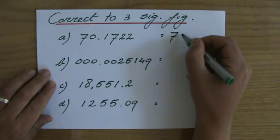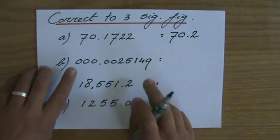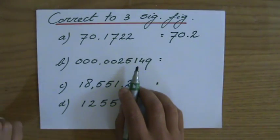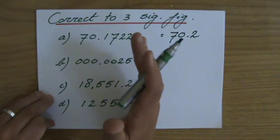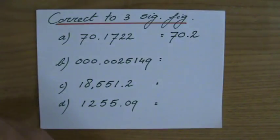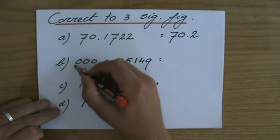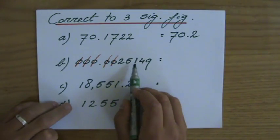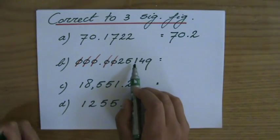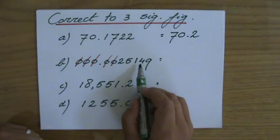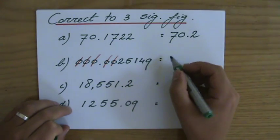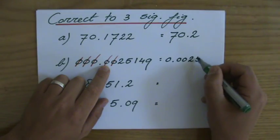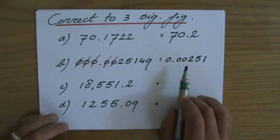Now this question: 0.0025149. Okay, now be careful because those zeros at the left side of my number, they are not significant. These are not significant figures. The two is my first significant figure, so first, second, third. The one stays a one or goes up to a two, that depends on the next number, so it stays a one since it's less than a five. So to three significant figures, this is going to be 0.00251.